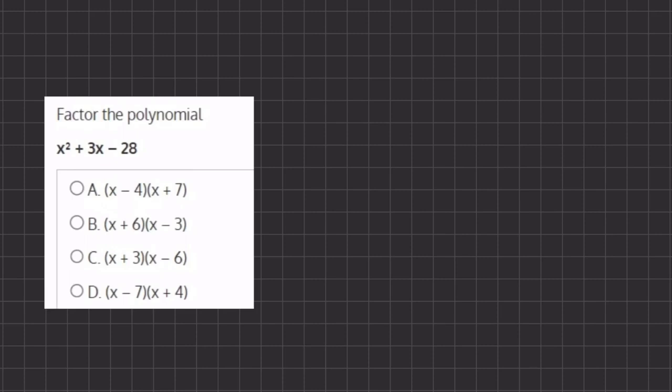In this problem we are asked to factor the polynomial x² + 3x - 28. To do so, we need to find two numbers that add to 3 and multiply to -28.